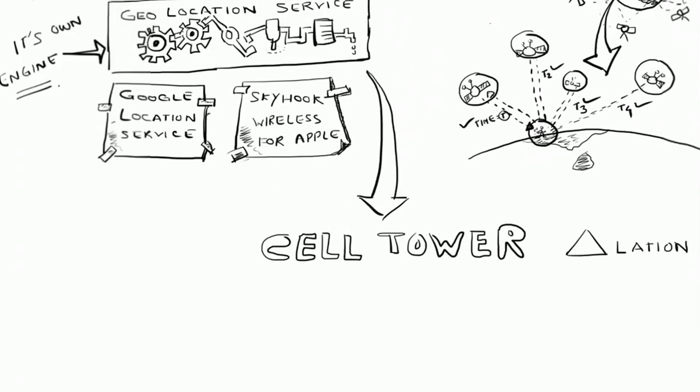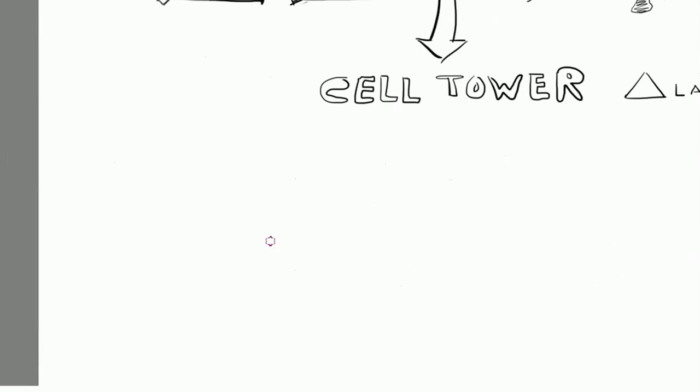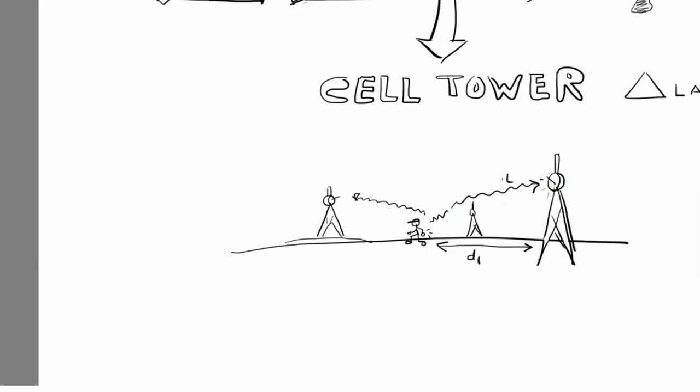But besides that, the first option what location services try is the cell tower triangulation method. This is the method where we have different cell tower communications and wherever you are, different cell towers catch the signals from your cell and try to locate you among them. In case if more than three such cell towers are in range, based on how fast the signal is getting received by these cell towers it will try to find out the distance of your device from the known location of the cell tower.